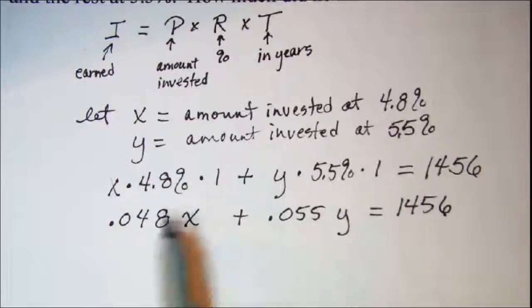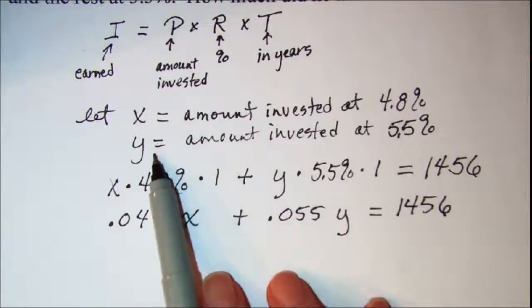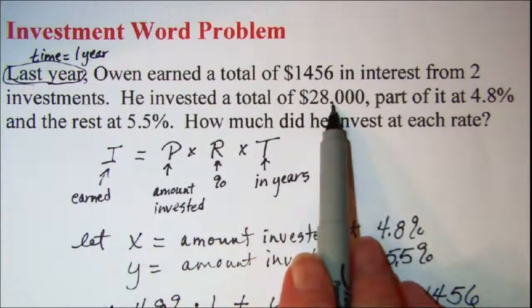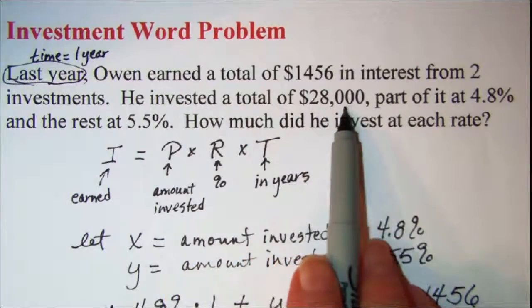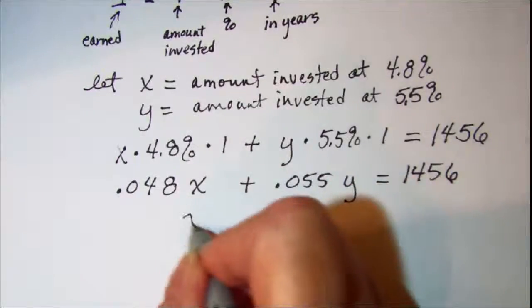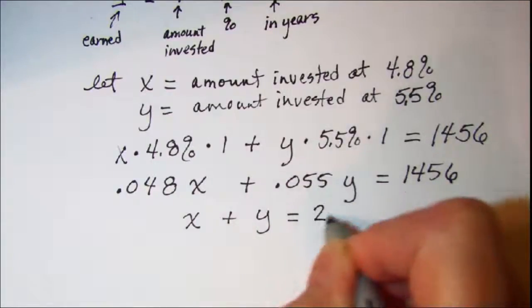Now since we have two variables we're going to need two equations. x plus y is the total amount invested and we can see from this sentence that he invested a total of $28,000. So we also have x plus y equals $28,000.